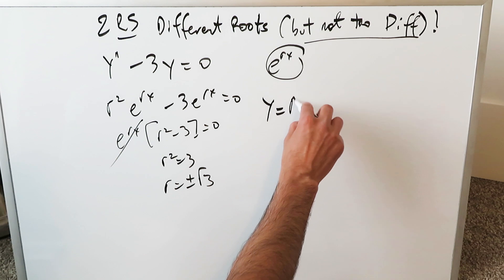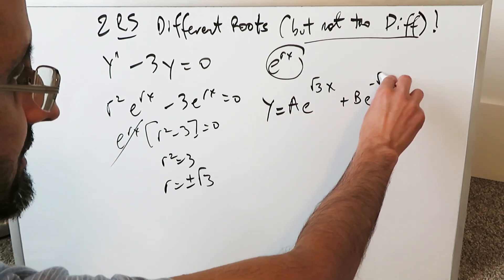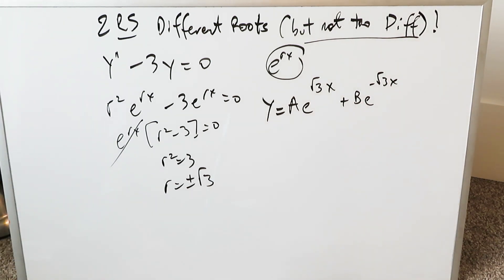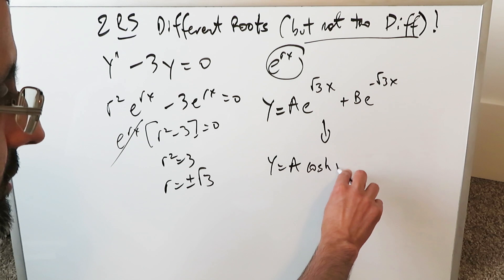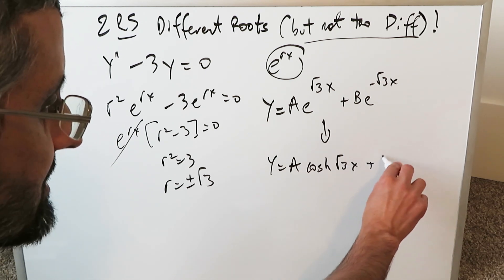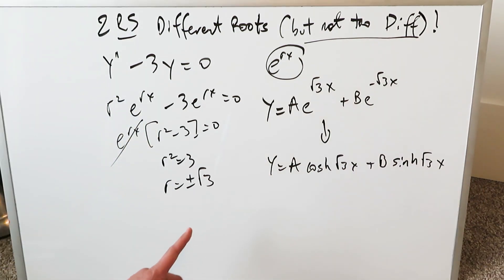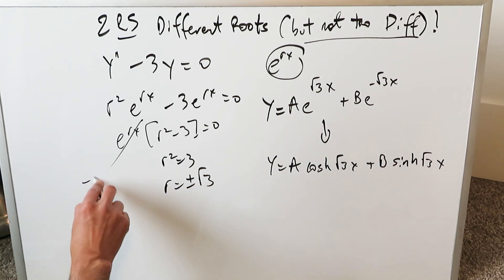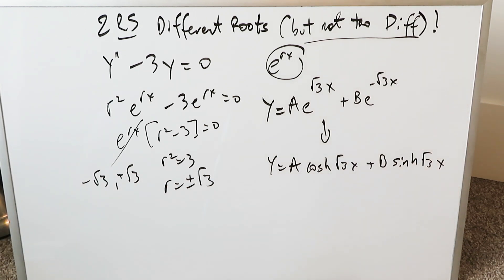You know the original way of presenting this answer: y is equal to a e to the root 3x plus b e to the minus root 3x. That's one way of presenting this answer. But the other way is: y is equal to a hyperbolic cosine of root 3x plus b hyperbolic sine of root 3x. These are two equivalent answers, but visually they're quite different. You have two roots, minus root 3 and positive root 3 — they're different, but visually the same, differing only by sign.